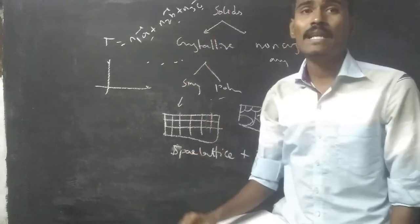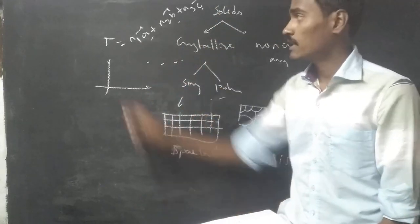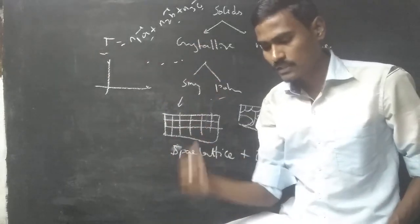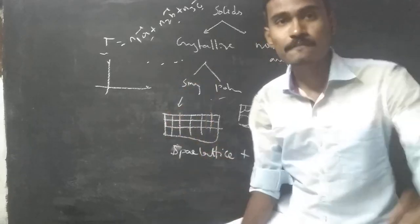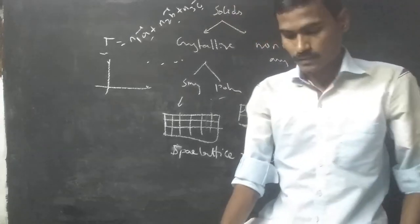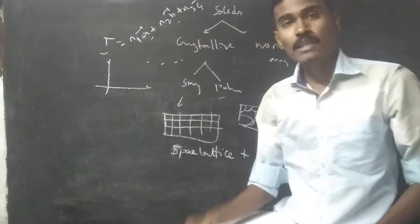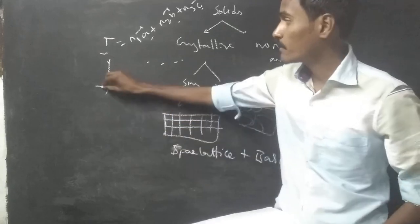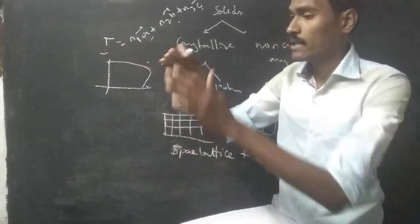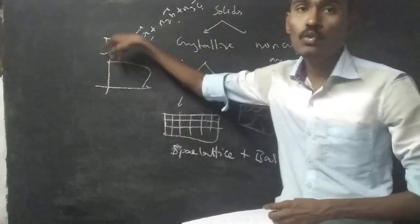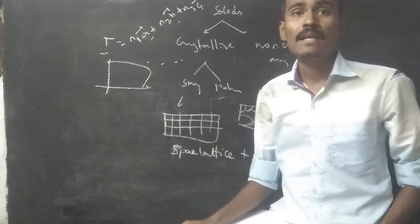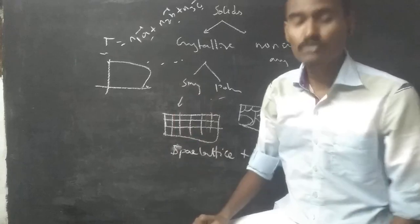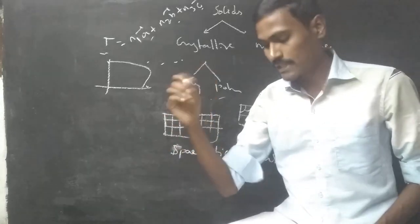The fundamental lattice vectors represent a shift or translation from one particular point to another in the lattice — these are translation vectors. The crystal axes a, b, c in particular directions are the primitive translation vectors.